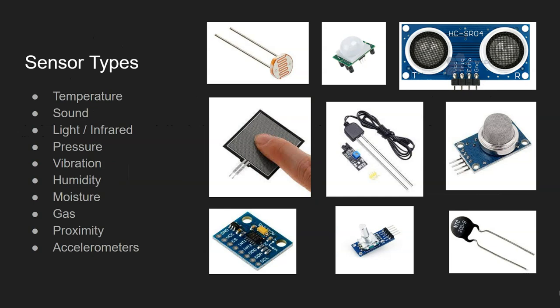Let's look at some common sensor types and uses. Temperature sensors are used in weather stations to record temperature. Sound sensors are used on mobile phones and in burglar alarm systems. Light sensors are used in burglar alarms, and infrared passive infrared sensors can be used in libraries, where they detect occupancy and only turn on the lights when someone is in that area.